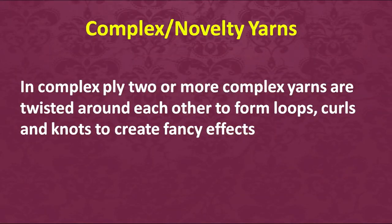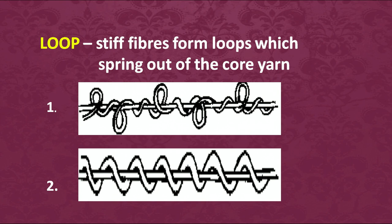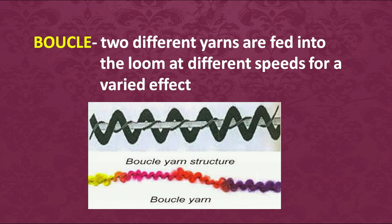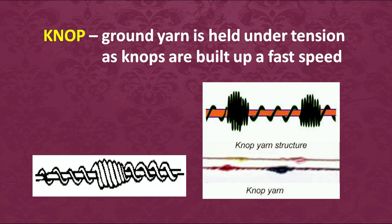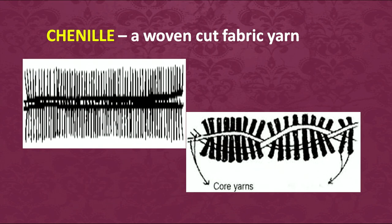In complex yarns we use ply yarns — two or more — which are twisted around each other using loops, curls, and knots to create fancy effects. Looking at the slide, you can see one ply running as a base with loops or twists coiled over it. We could also have a yarn where the basic yarn is held tight under tension and knobs are built up on it at high speed, creating a different texture. Chenille is a very common fabric used in India for dresses and bed linen, and its texture is also achieved through special yarns.